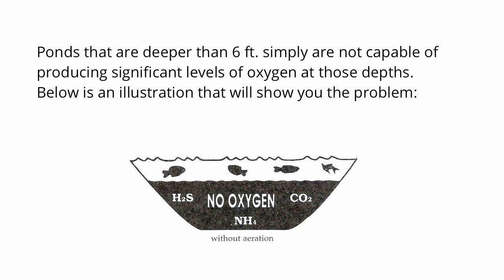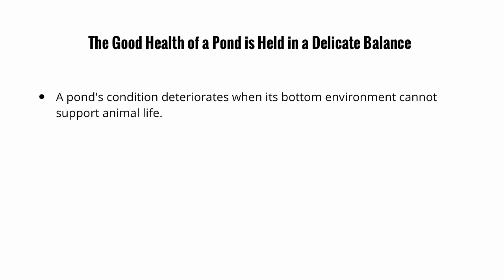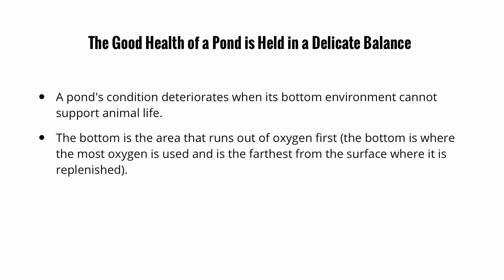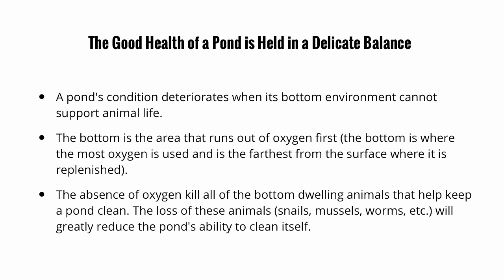Ponds that are deeper than 6 feet simply are not capable of producing significant levels of oxygen at those depths. The good health of a pond is held in a delicate balance. A pond's condition deteriorates when its bottom environment cannot support animal life. The bottom is the area that runs out of oxygen first — it is where the most oxygen is used and is the furthest from the surface where it is replenished.